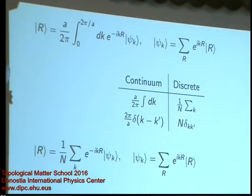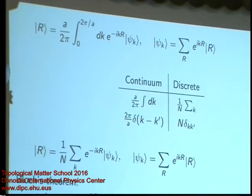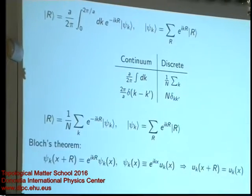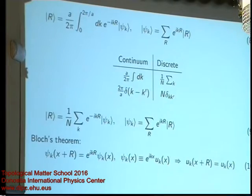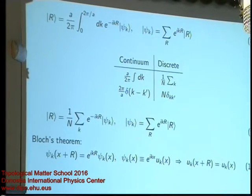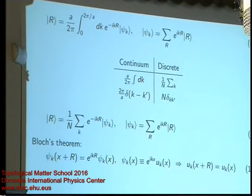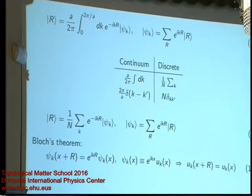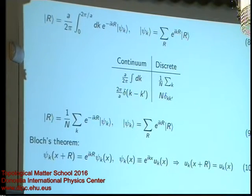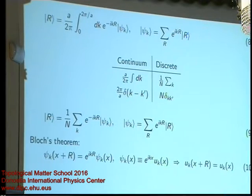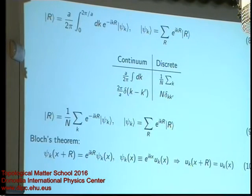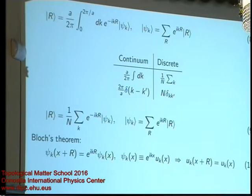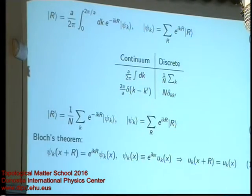Bloch's theorem — everybody in this room knows — states that when you change the argument of the Bloch function x by a lattice constant r, the Bloch function comes back to itself up to a phase factor e to the i k r. You can then introduce a new function u, related to psi by that equation. Plugging in that definition, the u actually does come back to itself precisely under a lattice translation. So psi k is the Bloch function and u is the cell-periodic part of the Bloch function.